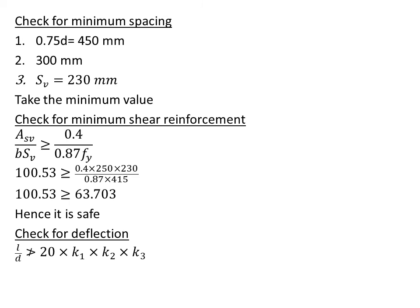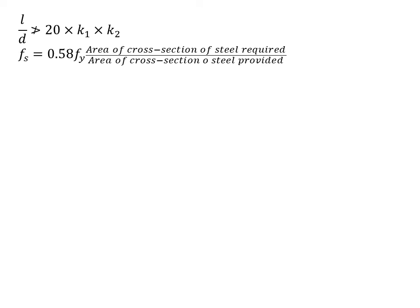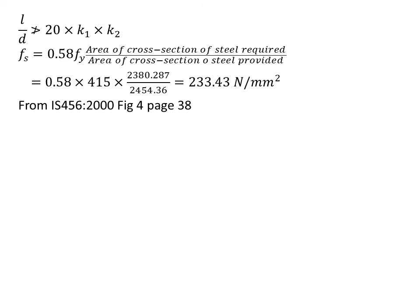Now we check for deflection. L/d, since the beam is simply supported, L/d should be less than 20 × k1 × k2 × k3. This is a doubly reinforced beam. k1 and k2 are the modification factors we have to consider. k3 is the reduction factor only needed for flanged beams, so k3 equals 1. We find the value of fs from figure 4, where there is a graph of modification factor versus percentage of tension reinforcement. The curve is fs equals 0.58fy × (area of steel required / area of steel provided). We substitute the value and get 233.43 N/mm². After checking the graph, we get k1 value 0.9.